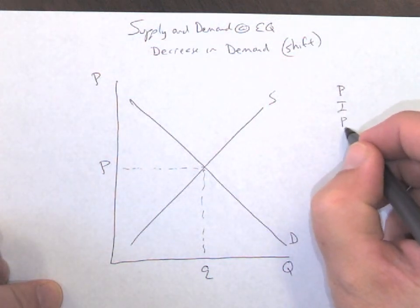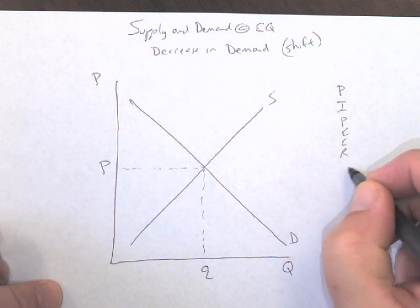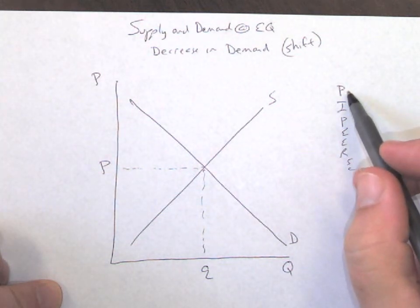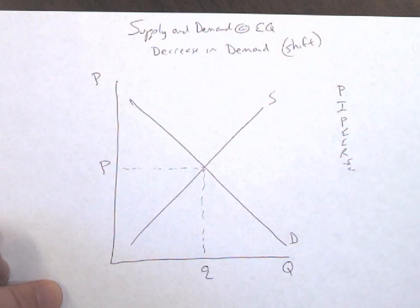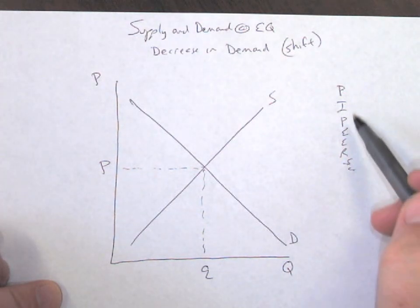So remember this is now going to be a PIPER thing. Preference, income, population, expectations, elasticity, related goods, which are substitutes or complements. So something in one of these changed.